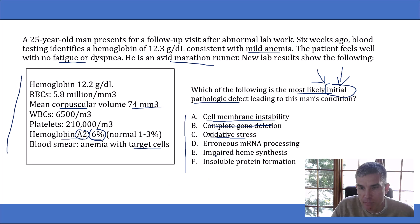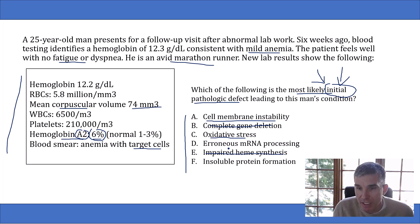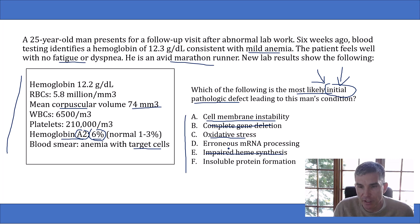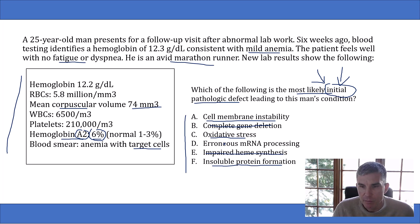Skipping to choice E — impaired heme synthesis. This is not correct, but I'll tell you at least 20% of students would pick it because they'd confuse the word 'heme' with 'hemoglobin.' There is impaired hemoglobin synthesis in thalassemia, but not impaired heme synthesis. The problem in thalassemias is producing globin chains — heme production is normal. In other disorders called porphyrias, that's where heme synthesis is abnormal. Answer choice F says insoluble protein formation — this definitely happens in thalassemias, as mismatched globin chains become insoluble inside red blood cells. But again, I'm waiting to find a better answer for the initial pathologic defect.